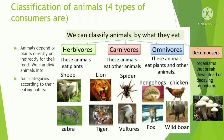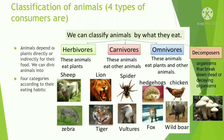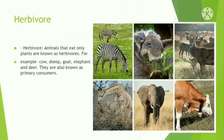We can classify animals on the basis of their food habits — what they eat. There are four types of consumers, because none of them can produce their own food, and they are directly or indirectly dependable on the producers.